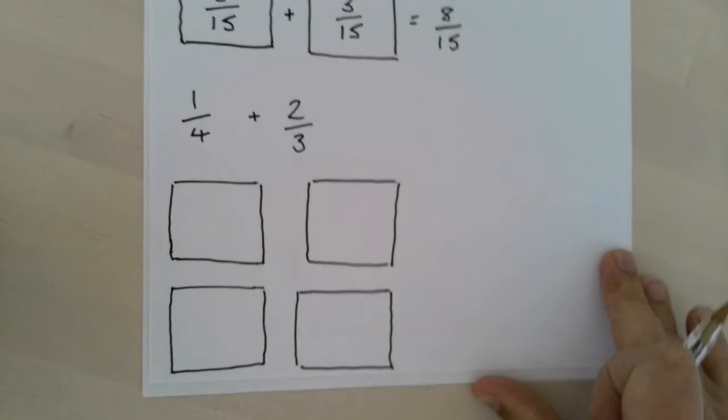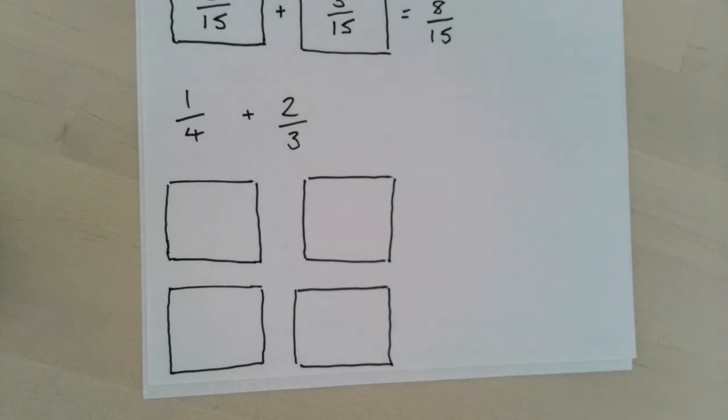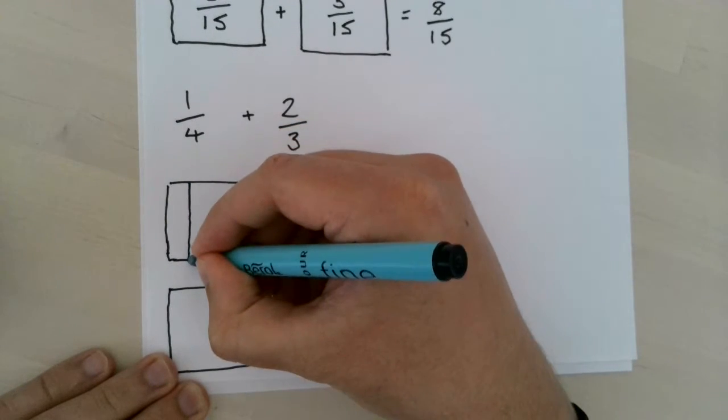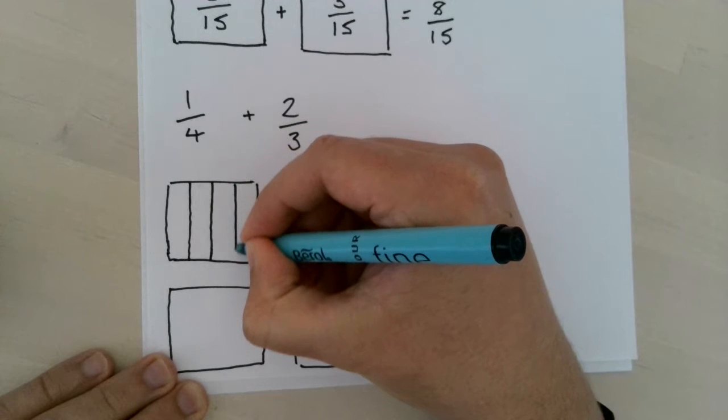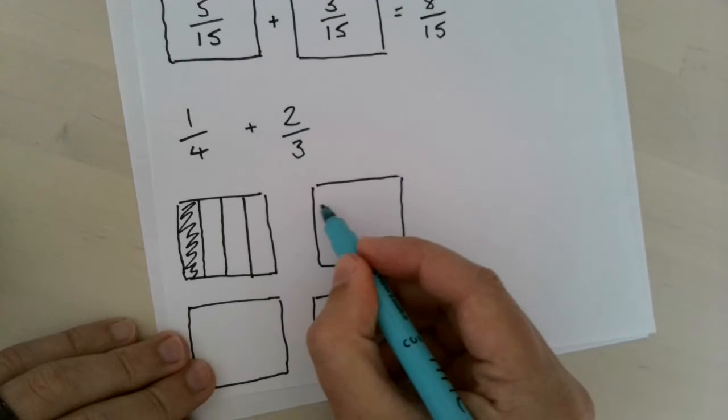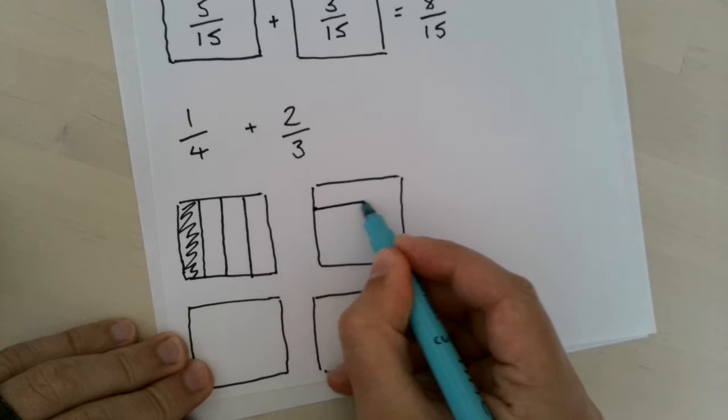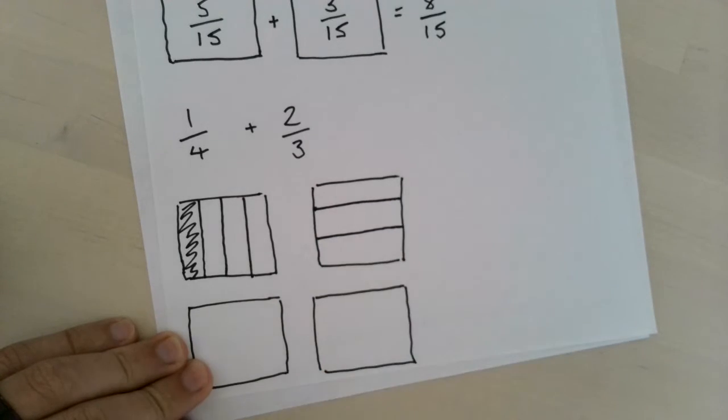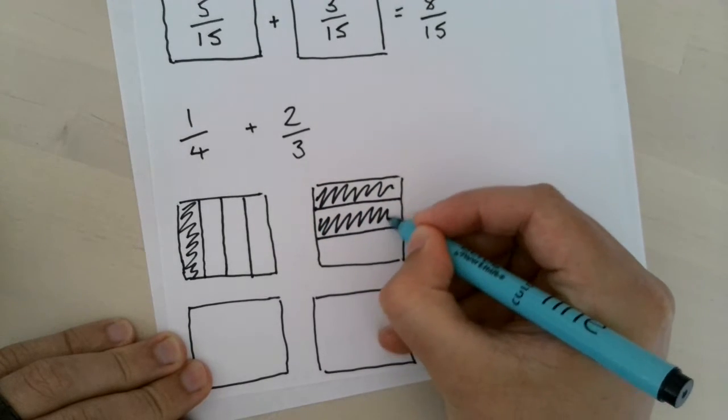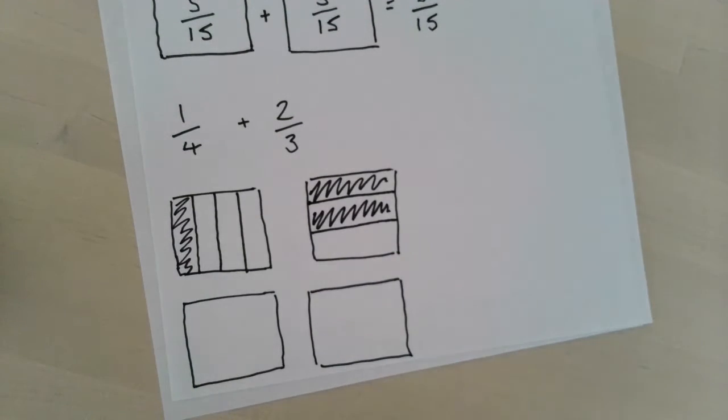Next question. Guys, have a go at that on your own and then I'm going to come back and talk you through it. So the first fraction, we're going to split into quarters, so four equal parts, and I've got one quarter shaded. The next fraction I'm now going to split into thirds, but I'm going to, like I did before, do it the opposite way around. So we've got two of those thirds shaded.